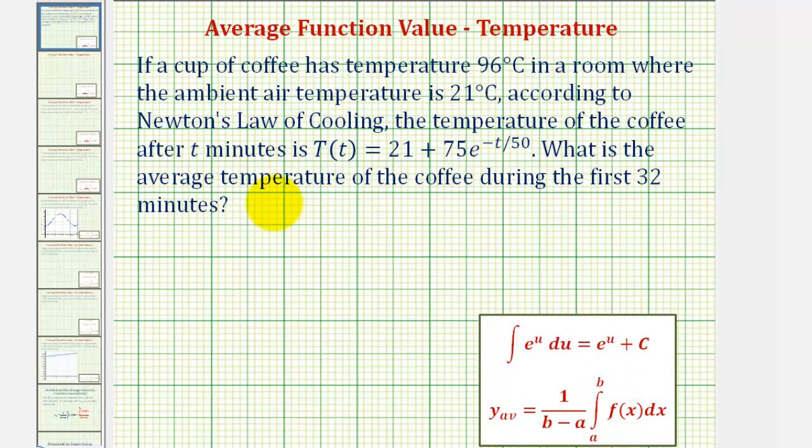Where in our case, A is equal to zero, B is equal to 32, and the integrand f(x) is equal to T(t).